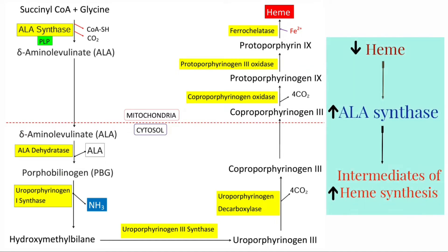Relative heme deficiency leads to derepression of the hepatic ALA synthase, which results in increased activity of ALA synthase, leading to overproduction of all the intermediates of the heme synthesis pathway.